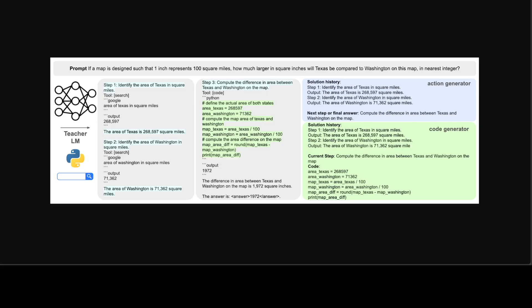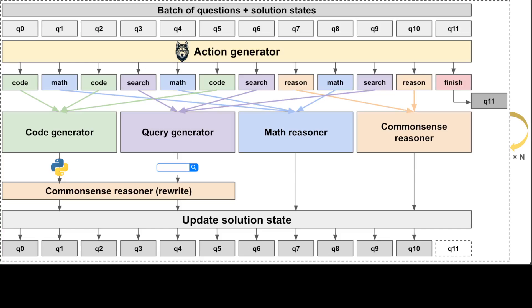If you look here, this is where they have shown the optimized inference for multi-step reasoning. Contrary to implementation for previous agents, Husky performs inference by batch processing all inputs and executing all tools in parallel. They jointly predict the next step and associated tool with the action generator over a batch of questions and their solution states.